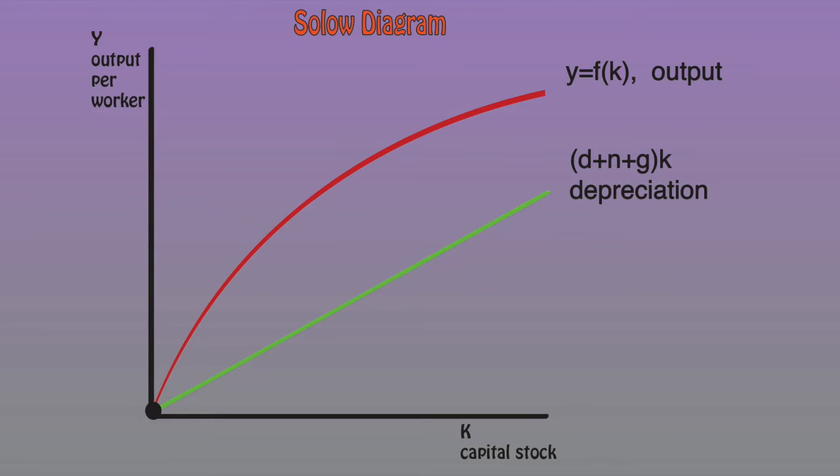We can show this on the graph by multiplying the level of capital against the variables depreciation rate, change in population, and change in worker efficiency.